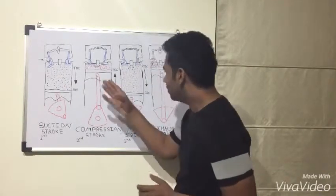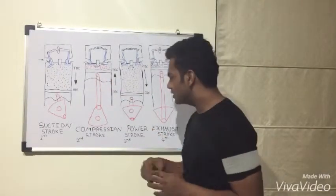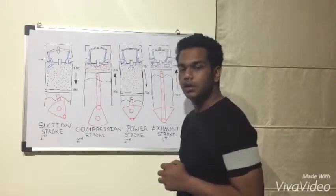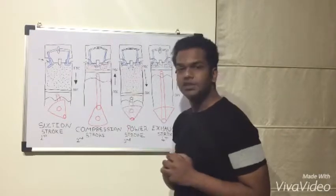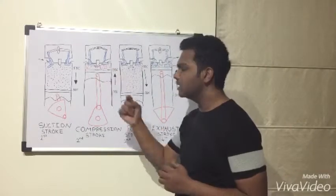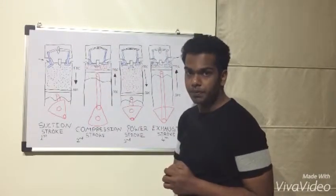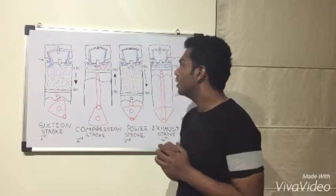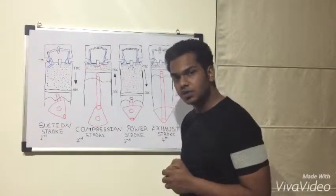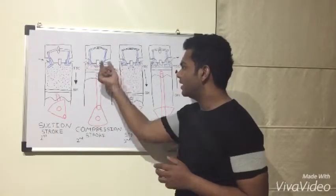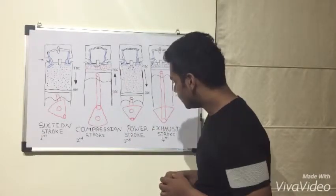Coming up towards the second stroke which is the compression stroke. During this stroke, both the valves stay shut and the piston travels from BDC towards the TDC. The air fuel mixture is being compressed to 8 bars and at the end of this stroke, it is being ignited by the spark plug.